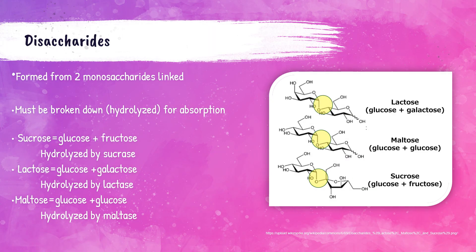Disaccharides are carbohydrates formed by the bonding of two monosaccharides. The most common are sucrose, lactose, and maltose. Sucrose is produced naturally in plants from which white sugar is refined. Lactose is found in milk and milk products. Maltose is a sugar in plant seeds. For our body to absorb disaccharides, they must be hydrolyzed by enzymes. Sucrose is broken down into glucose and fructose by sucrase, and lactose is broken down into glucose and galactose by lactase.